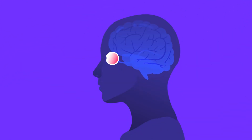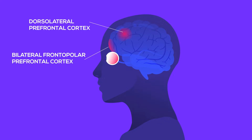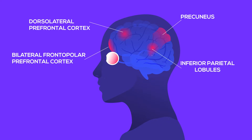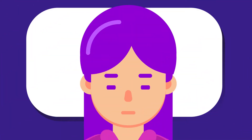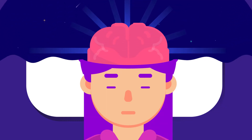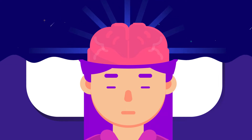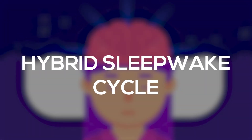The second difference is that during lucid dreaming, increased activity in the dorsolateral prefrontal cortex, the bilateral frontopolar prefrontal cortex, the precuneus, the inferior parietal lobules, and the supramarginal gyrus of the brain — similar to levels observed while awake — can be seen. All these areas are related to higher cognitive functions, including working memory, planning, and self-consciousness when awake. Therefore, lucid dreaming is sometimes referred to as a hybrid sleep-wake cycle.